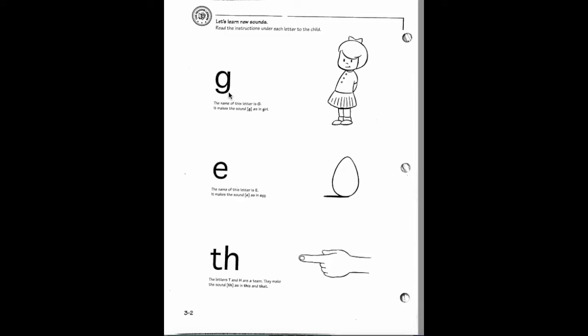G, g, girl. E, e, egg. The letters T and H are a team. They make the sound th, as in this and that.